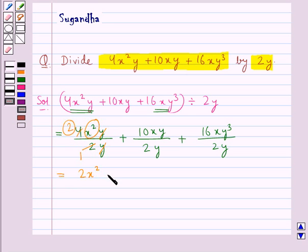So this is equal to 2x square plus now here 2 times 5 is 10. This y cancels with y and we are left with 5x plus this 2 times 8 is 16 and here we have 8xy square.